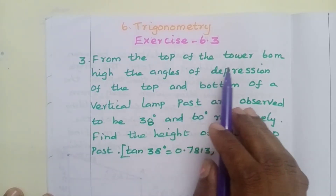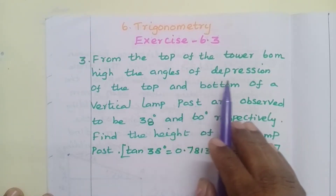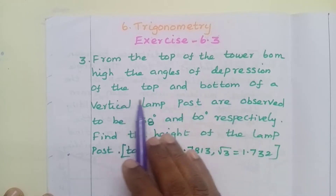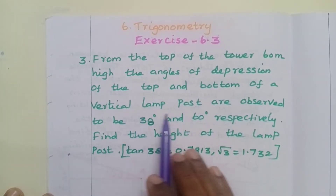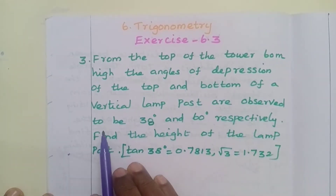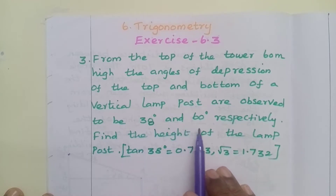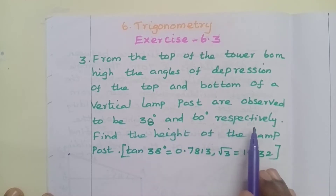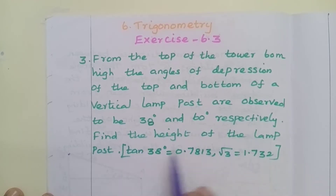From the top of the tower, 60 meters high, the angles of depression of the top and bottom of a vertical lamp post are observed to be 38 degrees and 60 degrees respectively. Find the height of the lamp post.